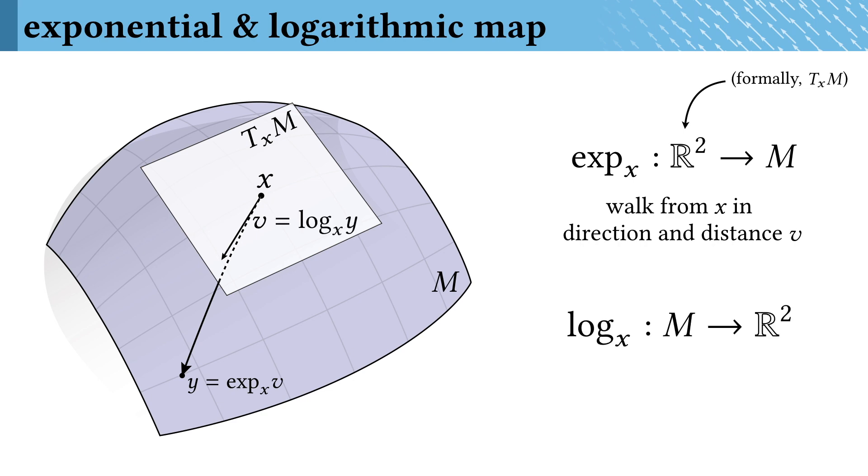A logarithmic map is just the inverse of the exponential map. With respect to a given source, for each point on the surface, it holds the direction and distance to walk from the source to get to that point. Unfortunately, some past work in computer graphics has interchanged these terms. The latter quantity is really the logarithmic map.